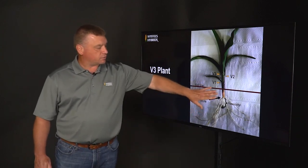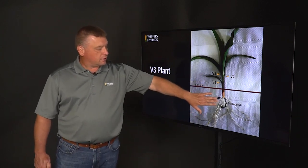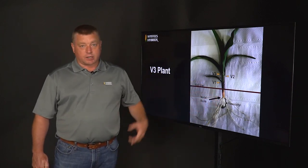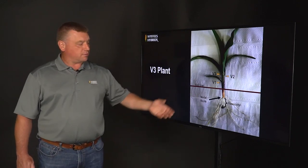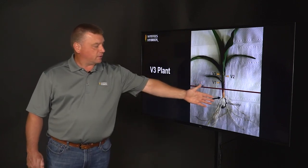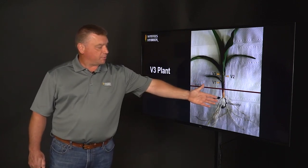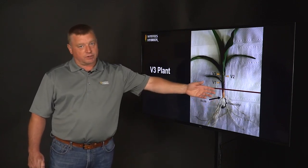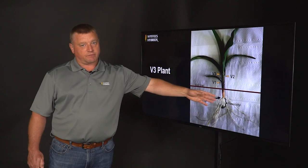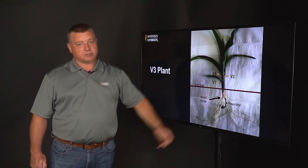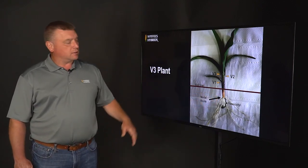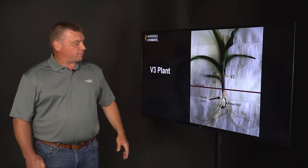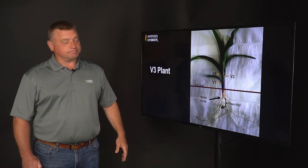At this stage, we also want the mesocotyl to remain healthy, because in a small V1 to V3 plant, if that mesocotyl gets damaged it can impact the corn plant from that point forward.